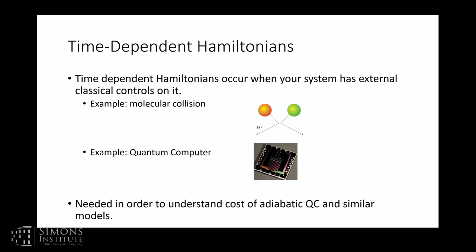Time-dependent Hamiltonians basically model systems that have external classical control. Imagine a pair of molecules colliding together. If those molecules are sufficiently heavy, the center of mass for the nuclei can be treated classically or semi-classically, whereas the electrons require a full quantum mechanical treatment. From that perspective, the position of the nuclei is just a time-dependent classical trajectory, and the nuclear forces acting on the electrons are also time-dependent. That's an example of a time-dependent Hamiltonian — but perhaps the most familiar one here is a quantum computer itself.